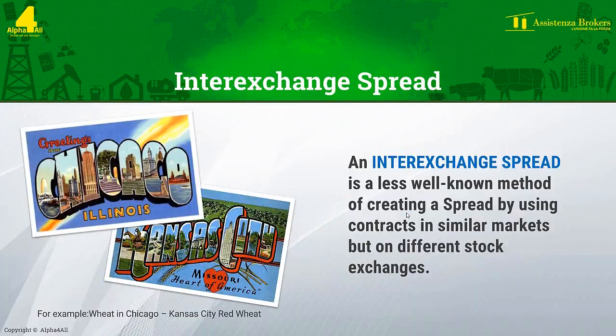Finally, the third type of spread that we trade is an inter-exchange spread. This type of spread is less well known and is undertaken when you use a future of similar markets that are traded on different exchanges. There are not that many futures that offer this type of trade, but an example would be trading wheat quoted on the Chicago exchange against red wheat which is traded on the Kansas City exchange. So now you know the three types of spread deal we can enter into. I hope the concept of spread trading is becoming somewhat clearer, and once you begin to fully understand the basic theory, things will start to fall into place.